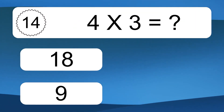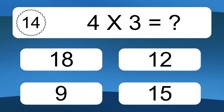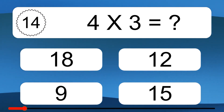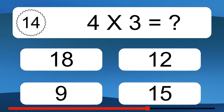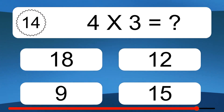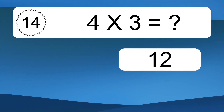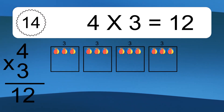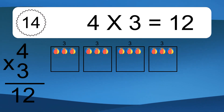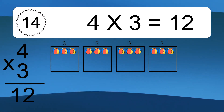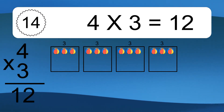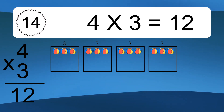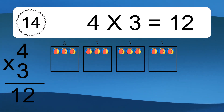4 times 3 equals what? 4 times 3 equals 12. We have 4 boxes, and each box has 3 colorful balls inside. If you count all the balls in all the boxes together, you will have 4 times 3 balls. This equals 12 balls.